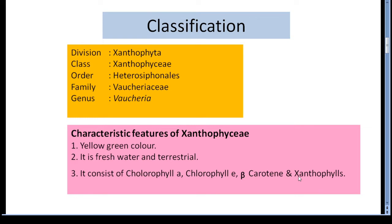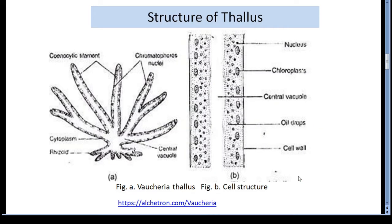The pyrenoids are absent. The chief reserve foods are oil, lipid and leucosin. Majority of the species of Vaucheria are either aquatic or terrestrial and are found upon damp soil and muds in yellowish-green velvet-like carpets. In terrestrial species, the rhizoid-like branches are present at the base of the thallus which attach it to the substratum.